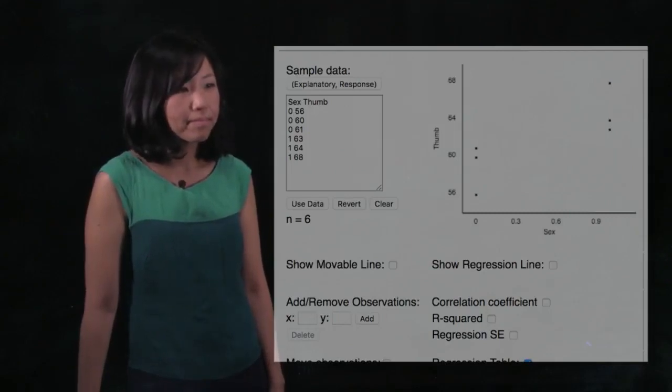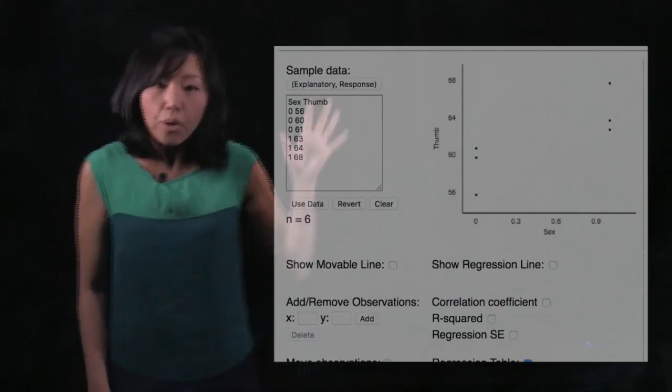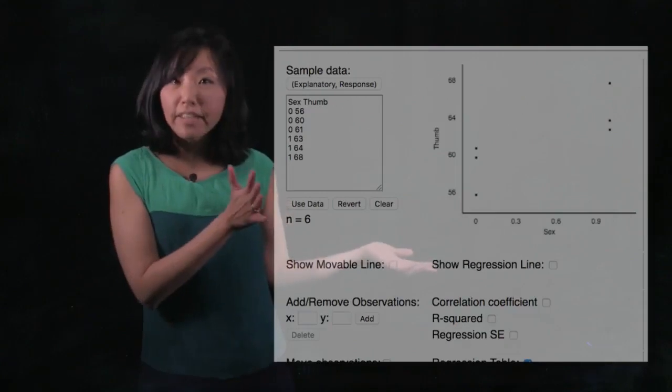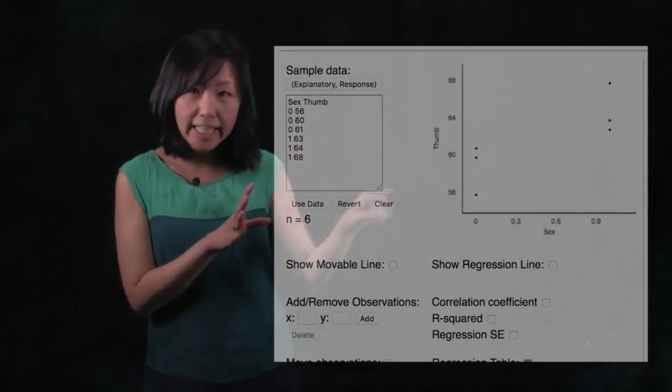Tell us how you're going to quantify error around the sex model and how sum of squares comes into that. Okay, so remember we've visited this kind of little app before. And just to reorient you, here is our tiny data, right?